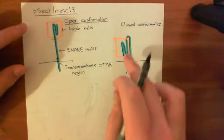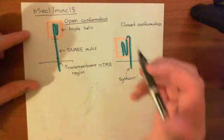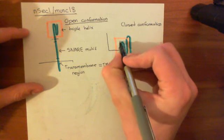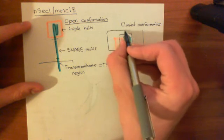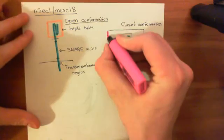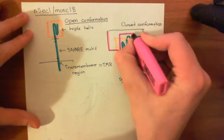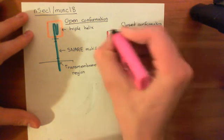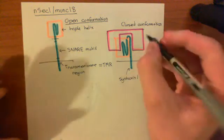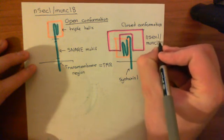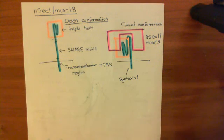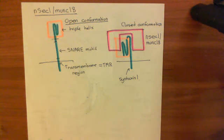How do you go from this closed conformation to actually forming core SNARE complexes? When Syntaxin 1 is first produced, it's in this closed conformation. Then — and this is still somewhat controversial science, but a good working model — the protein NSEC1, also called MUNC18, comes and binds to the Syntaxin 1 protein in its closed conformation.